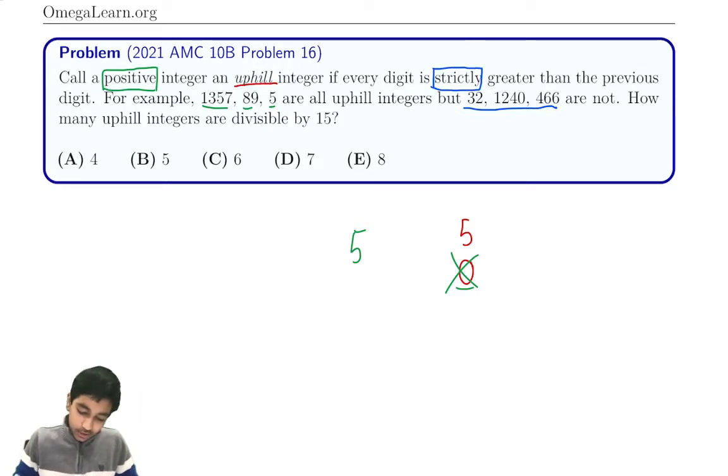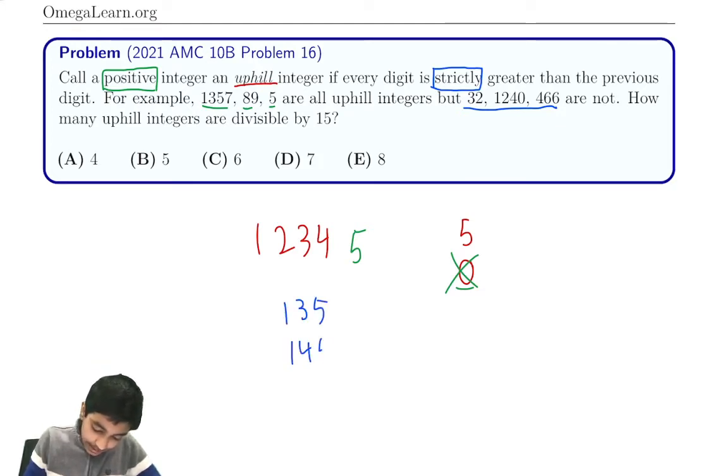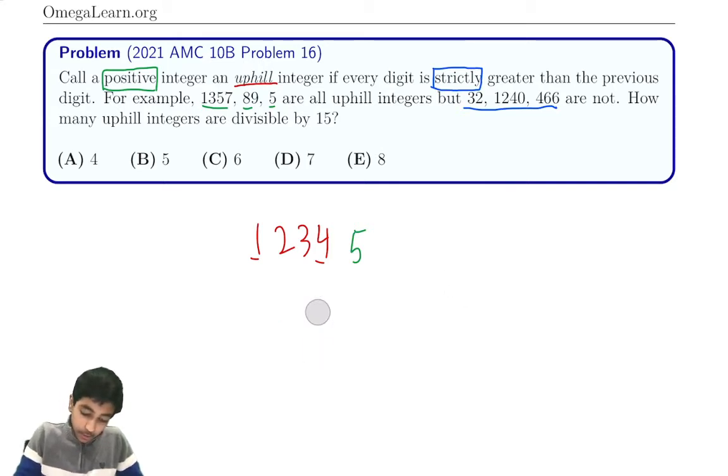But now we still have to use the divisible by 3 condition. It's not that straightforward yet. Notice that if it's uphill, then there's no way we can have any digits 6 or 9 in our number. Since we have 5 as the last digit, all digits besides 5 have to be less than 5. So basically we have to take some combination of these four digits: 1, 2, 3, 4. We could have something like 135 or 145, just take any subset of these digits. But now not all of them work. If the problem said only divisible by 5, then the answer would be 16 because we'd have two choices - include the digit or not - for each of the four digits. But it says divisible by 3, so it's a little bit more tricky than just that.